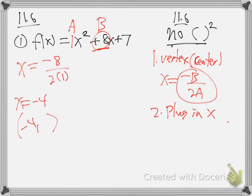So now plug it in - plug it in where? Back in the beginning. Remember, f of x is y. We've seen that before. Function letters are y - f of x, g of x, h of x - those are just y. So this is really saying y equals x squared plus 8x plus 7.